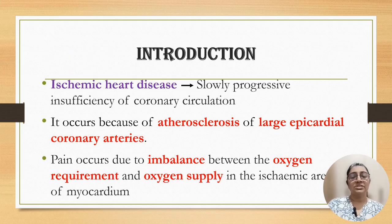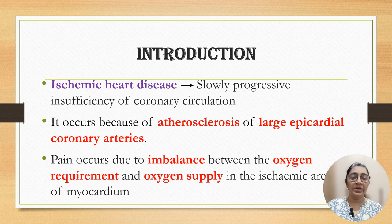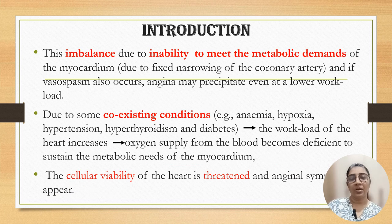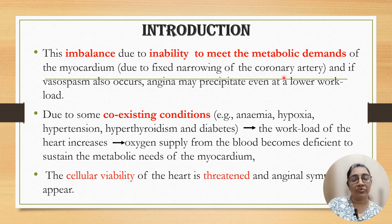What is ischemic heart disease? It is slowly progressive insufficiency of coronary circulation. It occurs maybe due to atherosclerosis of the large epicardial coronary arteries. Pain occurs due to imbalance between oxygen demand and oxygen supply in the ischemic area, due to inability to meet the metabolic demand of the myocardium, which may be due to fixed narrowing of the coronary arteries or vasospasm. Angina may precipitate even at lower workload.